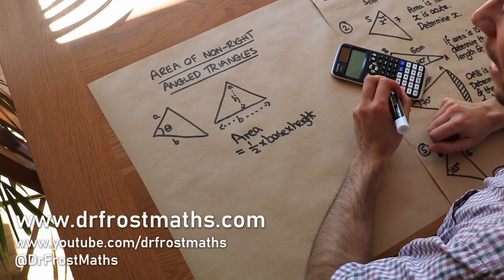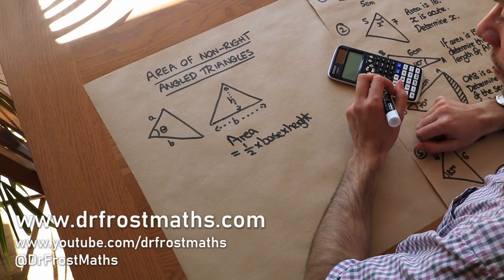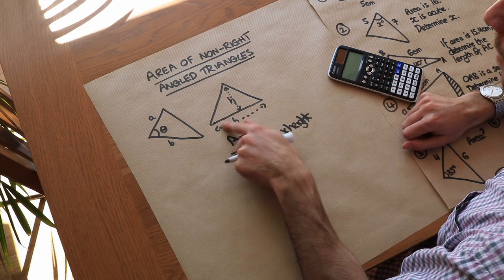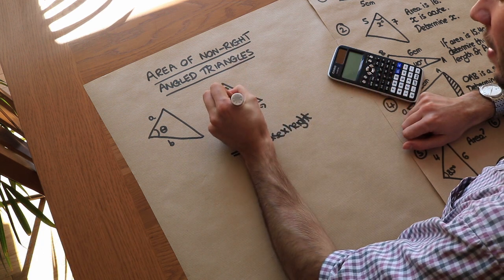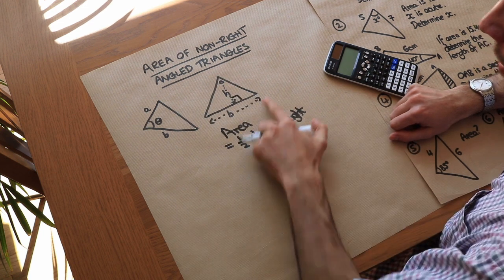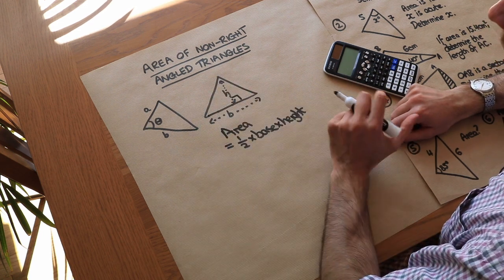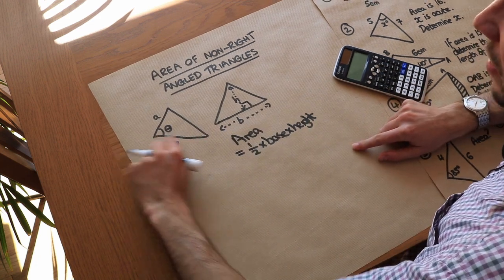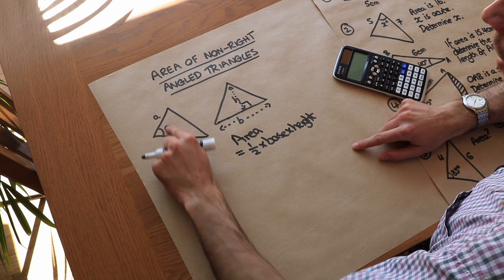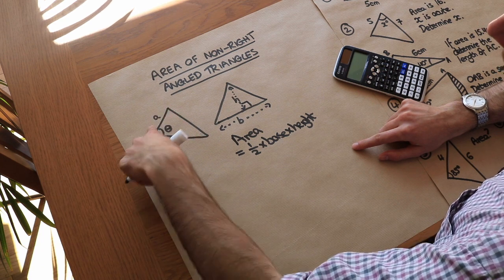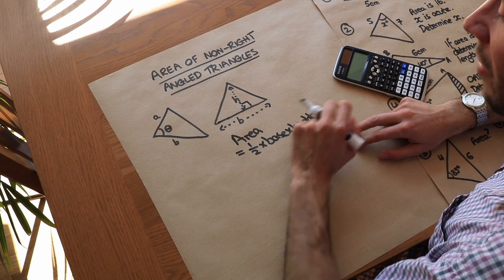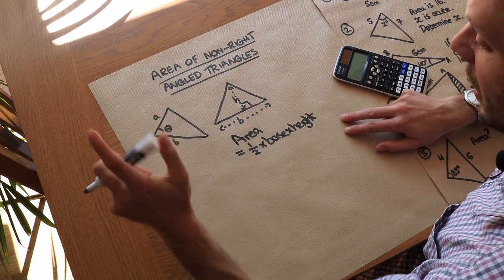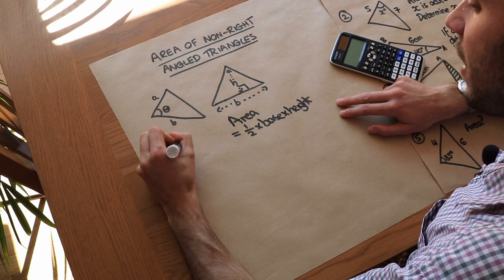Welcome to this video on the area of non-right angle triangles. We've previously seen how we can find the area of a triangle if we have the base and the perpendicular height — we just do half times base times height. But what if we didn't know the perpendicular height? If we have the length of two sides and the angle between them, there's a really nice formula we can use.